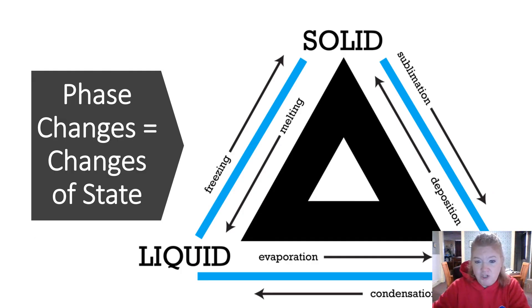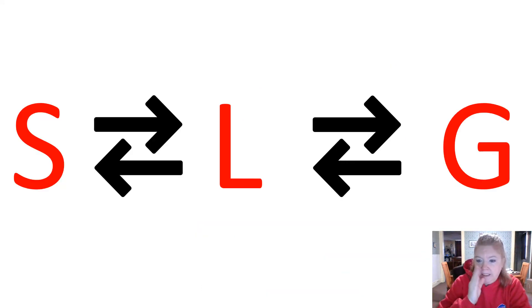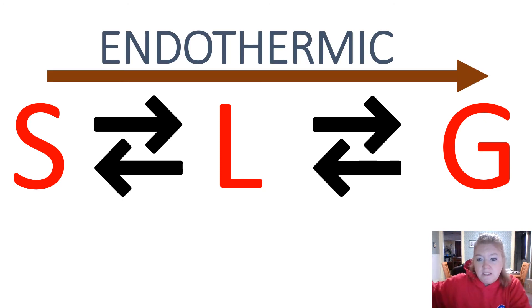All right, so here's a chart about phase changes, but we're going to go through them. So we can change from a solid to a liquid to a gas. We can also go from solid to a gas or from gas to a solid. So, solid, liquid, gas. We can go from solid to liquid, but also liquid to solid. That's why the arrows go in both directions. If we go this way, moving from solid to liquid to gas, it is endothermic. It takes energy in. Anytime we follow that line.